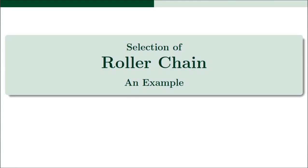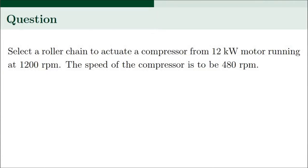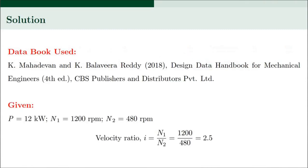In today's session we will be solving a numerical example on the selection of roller chain. The question is: select a roller chain to drive a compressor from a 12 kilowatt motor running at 1200 rpm. The speed of the compressor is to be 480 rpm.